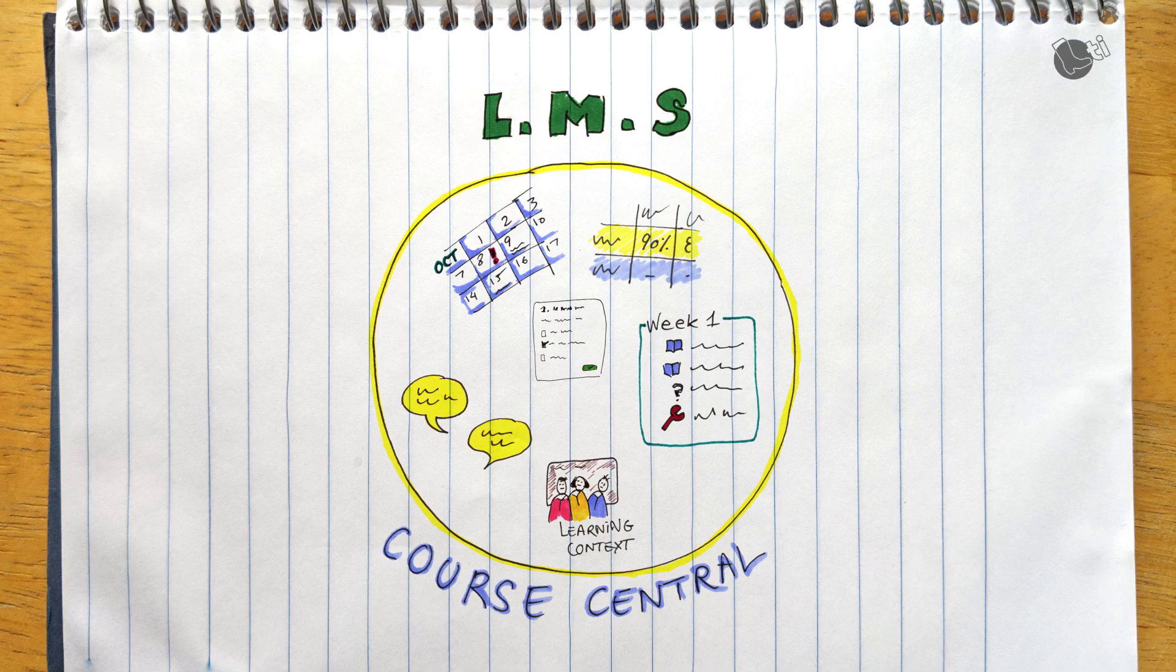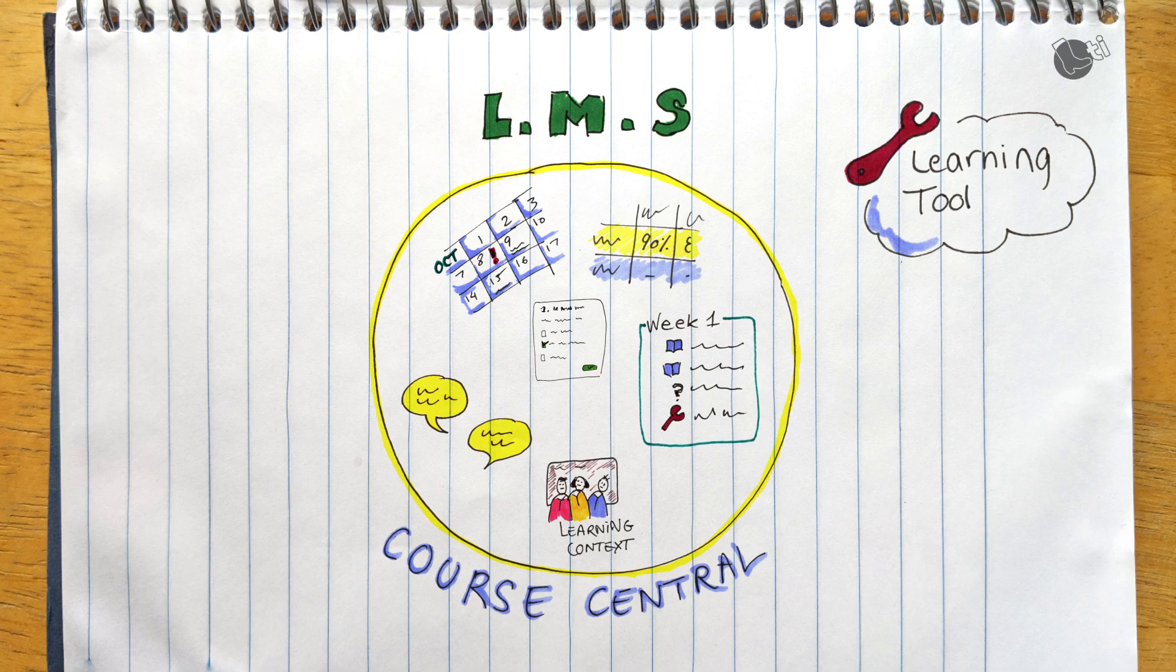So as an instructor or institution, you might find content or activities relevant to some of your courses or all your courses. For example, there might be a great economic simulation you would want to include in your microeconomic course. But how do you put it in there because it's offered by another vendor?